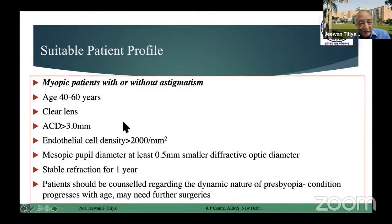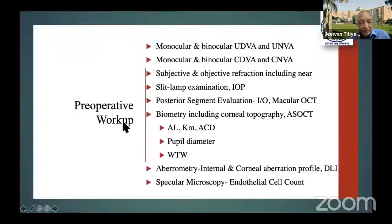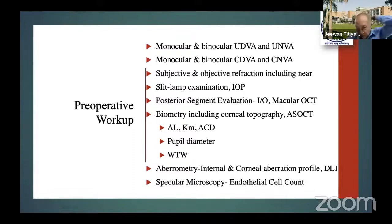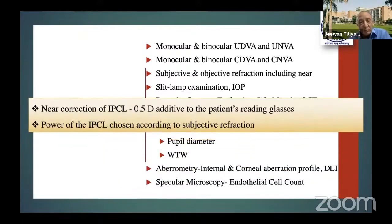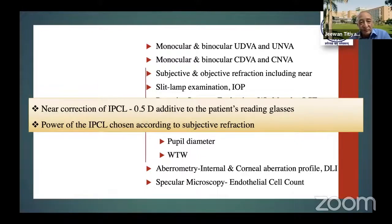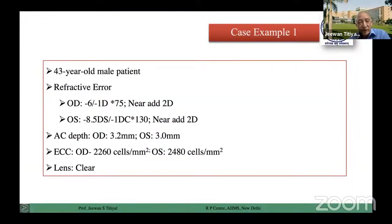ACD — I normally take more than 3 millimeters considering the older age group of these patients. For pre-op workup, the only thing I add is a proper iTrace examination for all patients — looking for aberration profile, internal aberration, and DLI, which is a very important point in these cases. As far as corrections are concerned, I add 0.5 diopter addition to the reading glasses for these patients for effective correction. This is one patient of mine — a 43-year-old male with moderate refractive error, good parameters, and good AC depth.